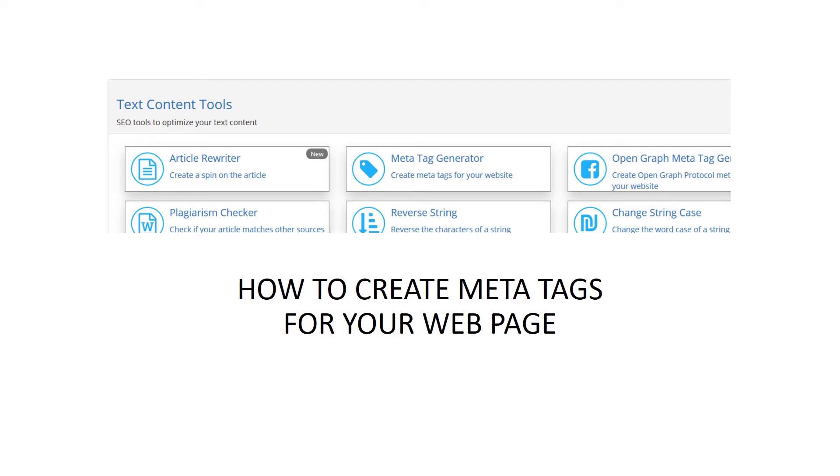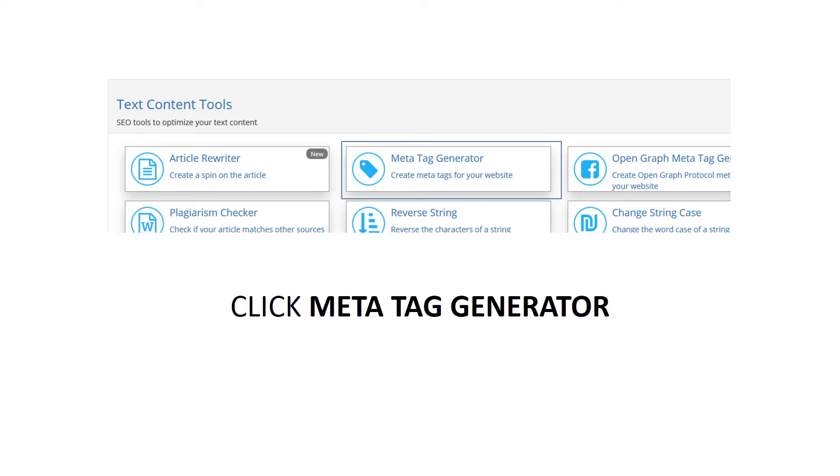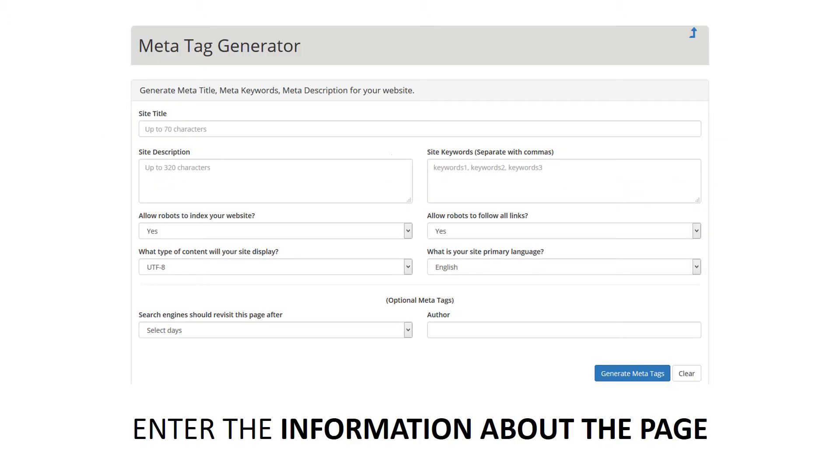A meta tag is a hidden text placed in the head tag section of your web page that helps tell search engines what a web page is about.